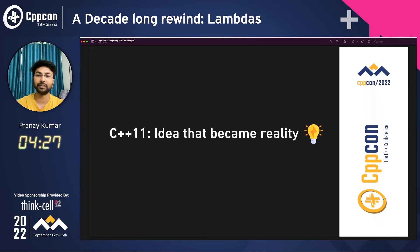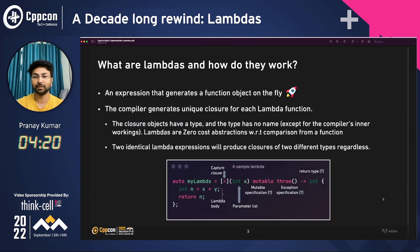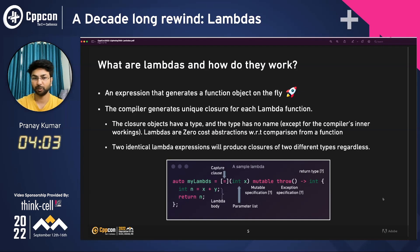What happened in C++11 is that lambdas was the idea that became reality. Lambdas are named expressions that generate a functional object on the fly. The compiler generates a unique closure for each lambda function. The good thing about this closure is that they have a type, but the type doesn't have any name — only the compiler knows it for its inner workings. Lambdas are zero-cost abstractions if you compare them with a function. Two identical lambdas that have the same body would still produce closures of two different types altogether.